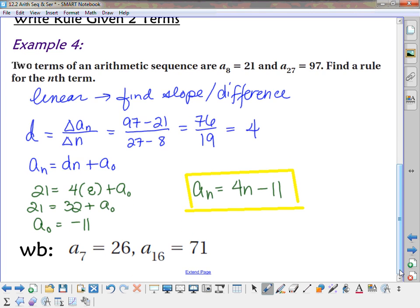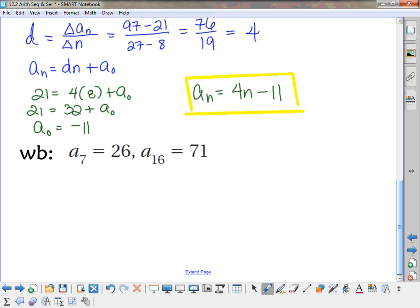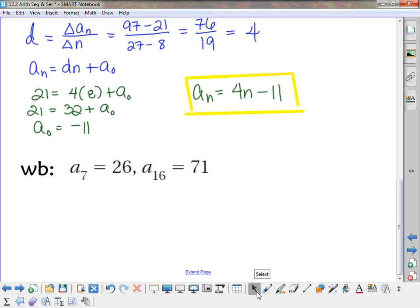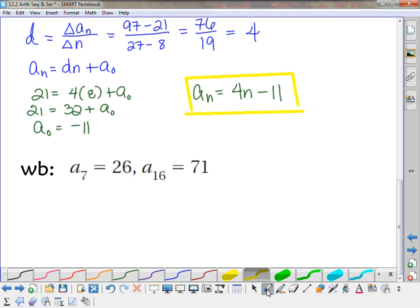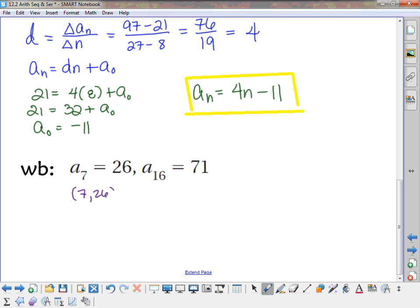All right, so here's another one. You guys can do this one completely on your own, without any help from me. A sub 7 is 26, and a sub 16 is 71. Find the slope of your line. Because, again, it's like you've got two points, right? I've got the point 7, 26, and I have the point 16, 71. Find the slope. And then find the equation.